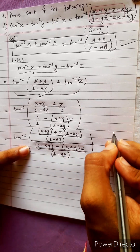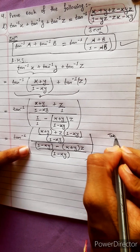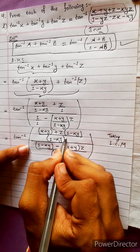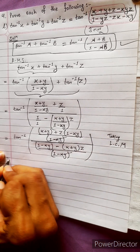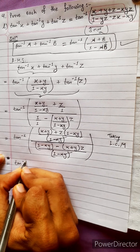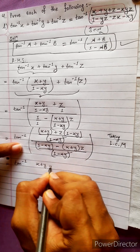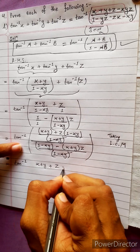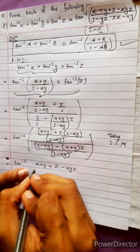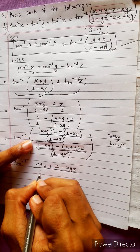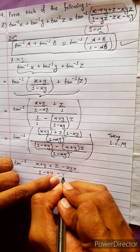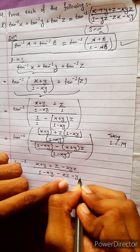Taking the lowest common multiple, these terms cancel. We get tan inverse of: x plus y plus z minus xyz in the numerator, divided by 1 minus xy minus xz minus yz in the denominator.